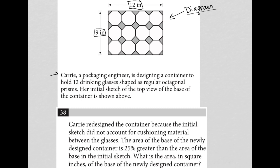So that's what we're taking a look at here. Question 38 says, Carrie redesigned the container because the initial sketch did not account for cushioning material between the glasses.